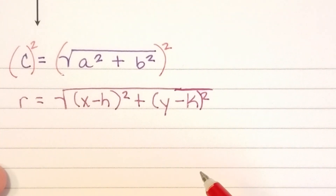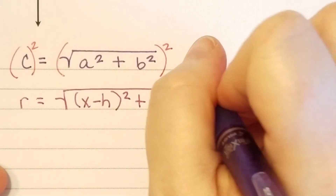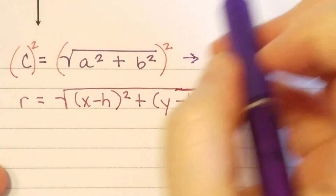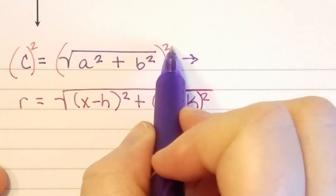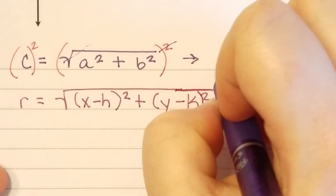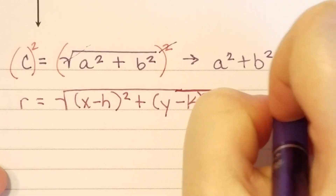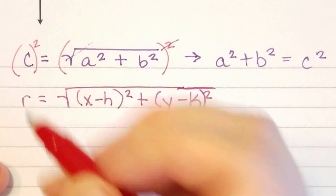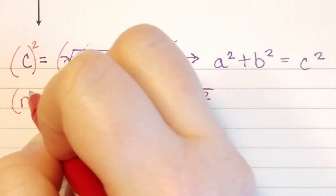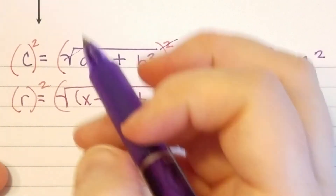So if I square this, I'll have c squared. And if I square a square root, these basically undo each other. So I could rearrange this to be a squared plus b squared equals c squared. And I can do the exact same thing with this right here, because they are in fact the same thing.